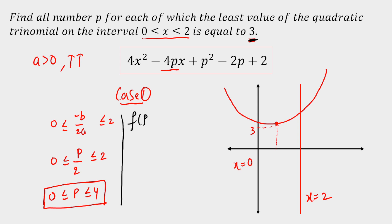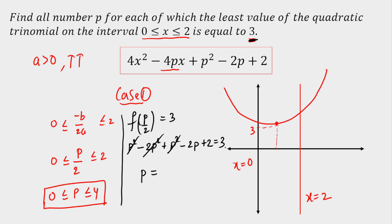That means f(P/2) should equal 3. Let's substitute x = P/2. You'll get P² - 2P² + P² - 2P + 2 = 3. From here, P² and -2P² cancel out, giving P = -1/2. But this is not possible because we required P from 0 to 4. So this case is rejected.